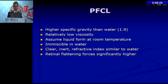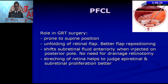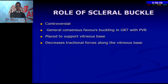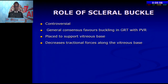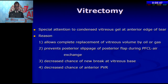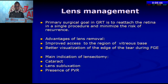PFCL, introduced by Chang, is a heavy fluid with specific gravity of 1.9 and low viscosity — it provides a third hand during surgery. The role of scleral buckle is controversial; even with early PVR, you can manage without a buckle. Putting a scleral buckle can cause fish-mouthing of the GRT. Only in advanced PVR cases is a scleral buckle needed to support the vitreous space. The anterior flap of the torn retina should be completely removed to prevent recurrences.